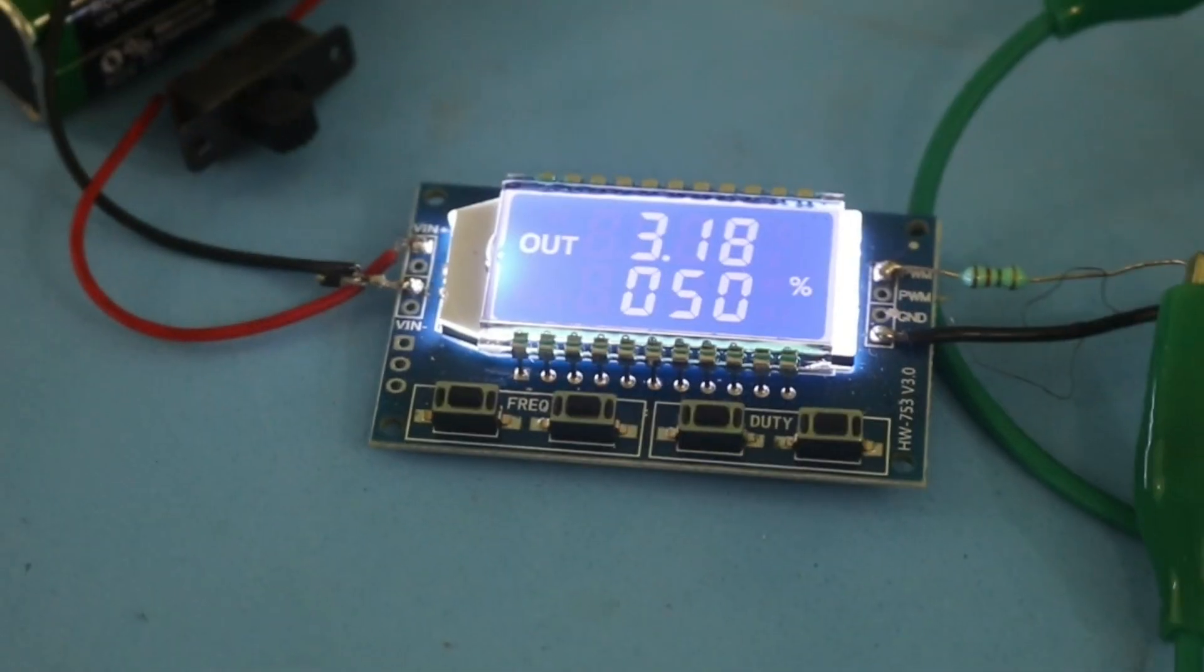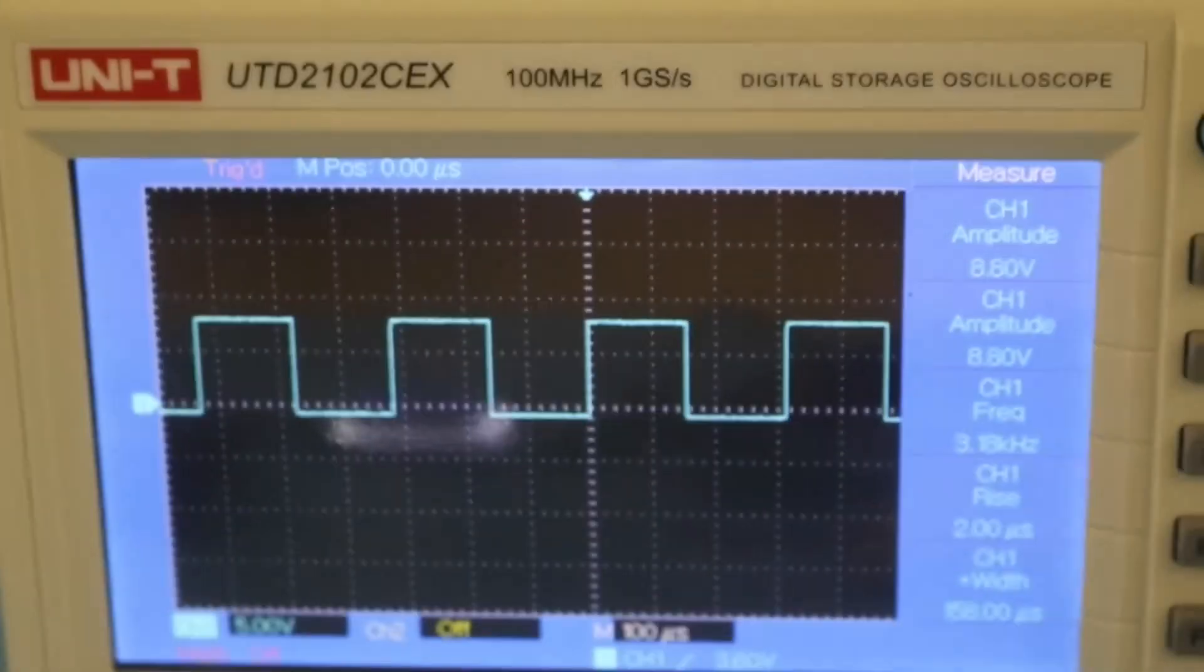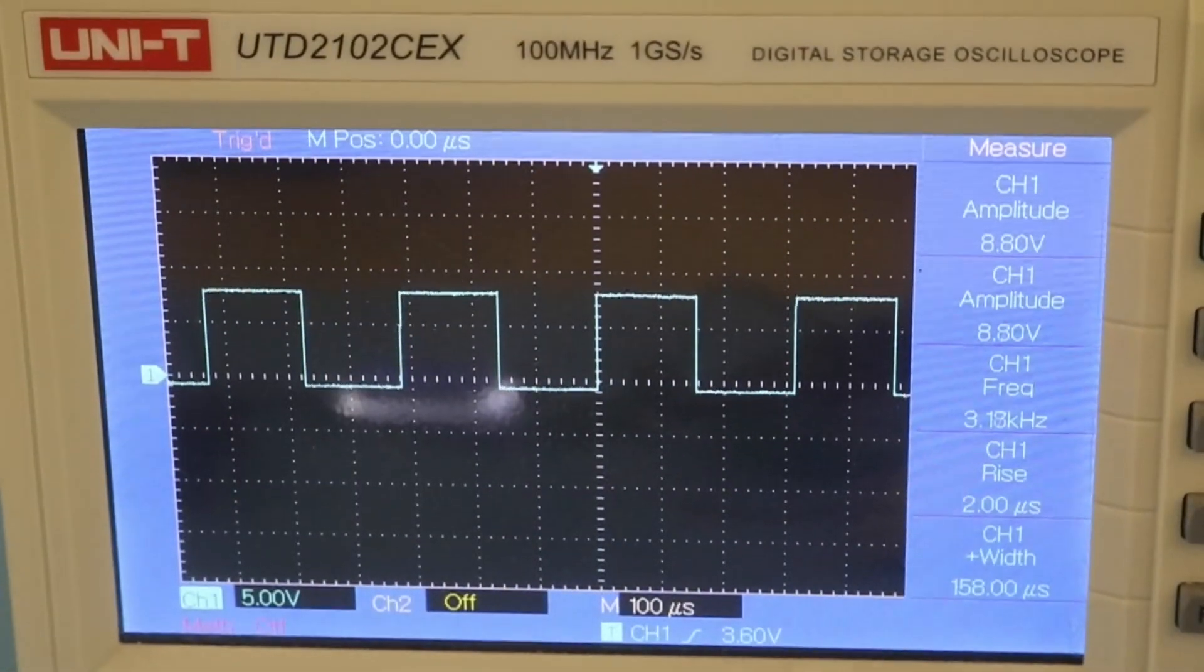Okay, I have set the frequency at 3.18 kilohertz and here at the oscilloscope we can see the output, a square wave of that frequency.